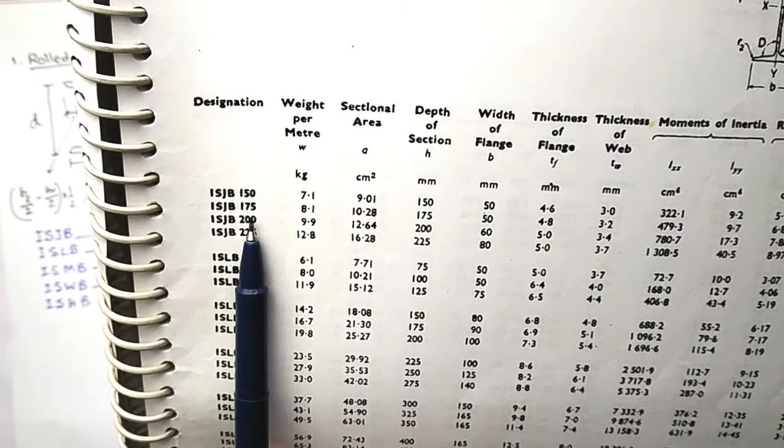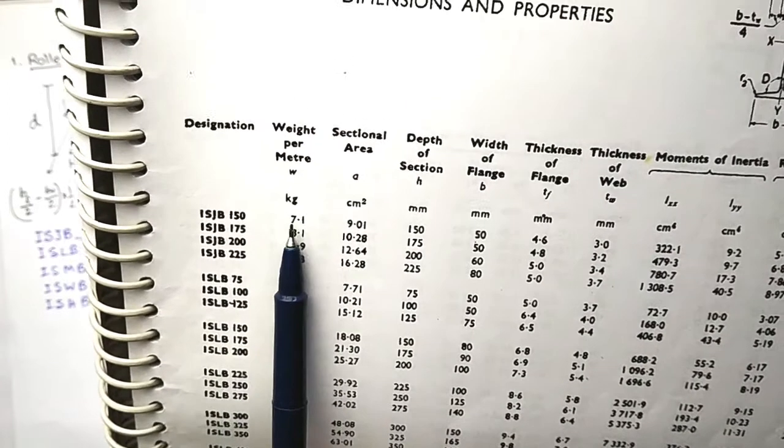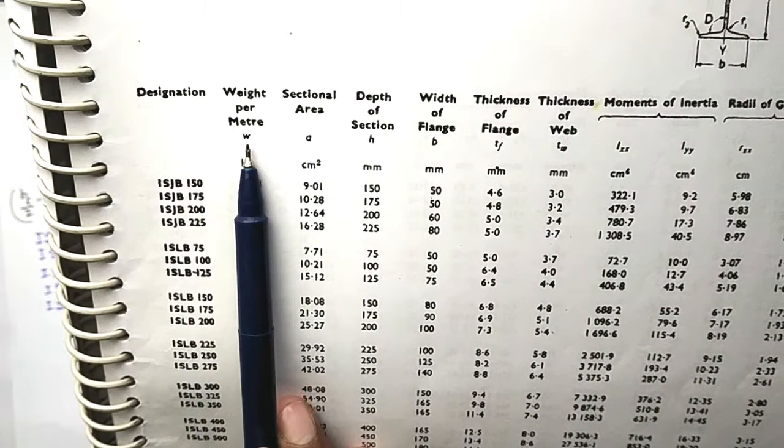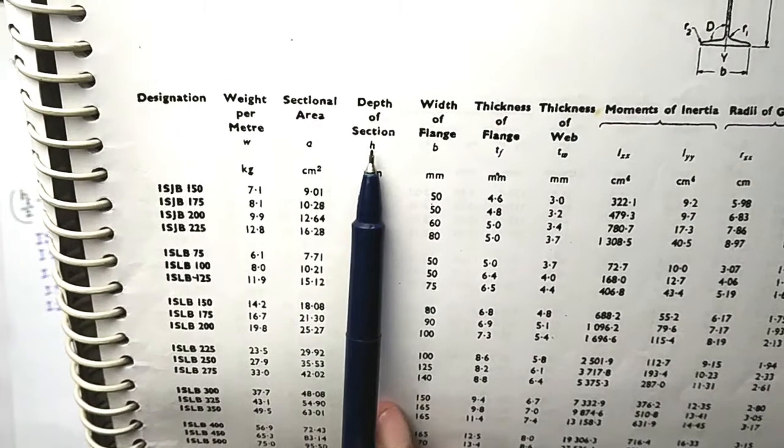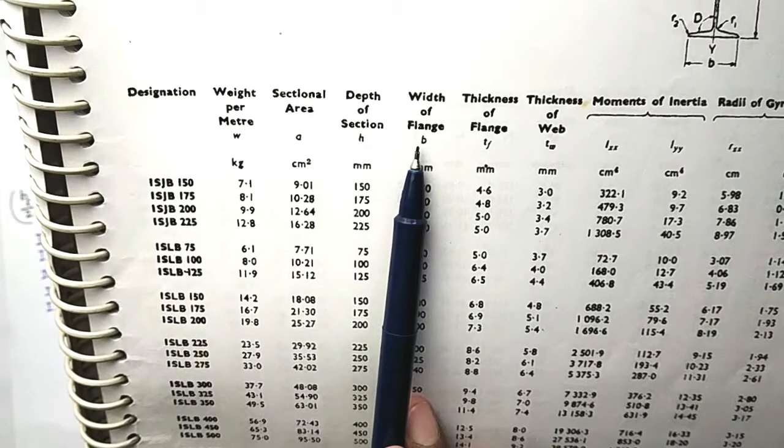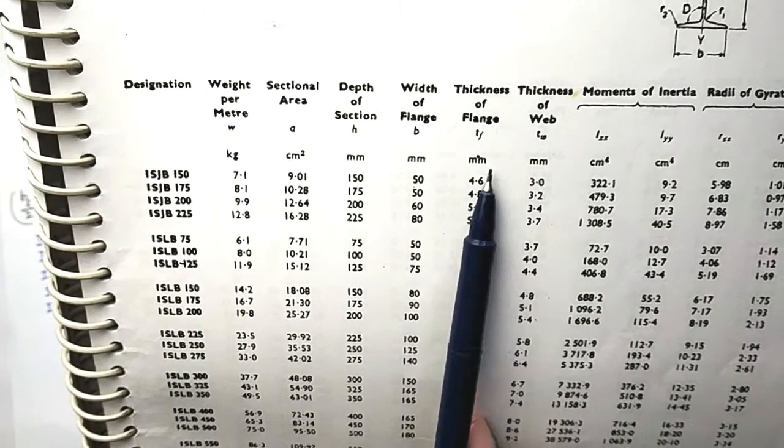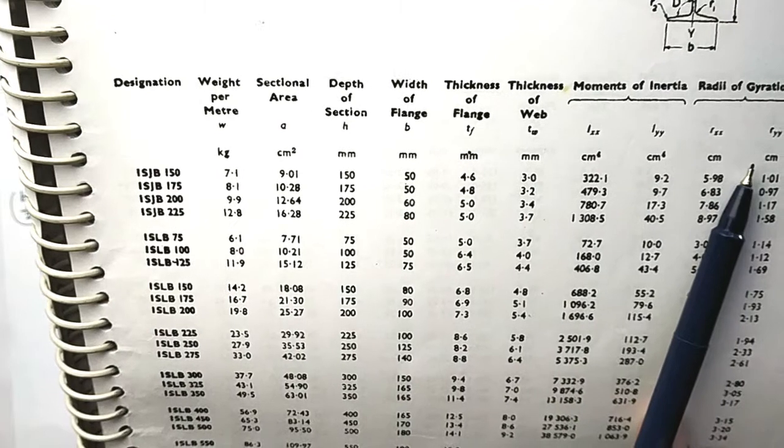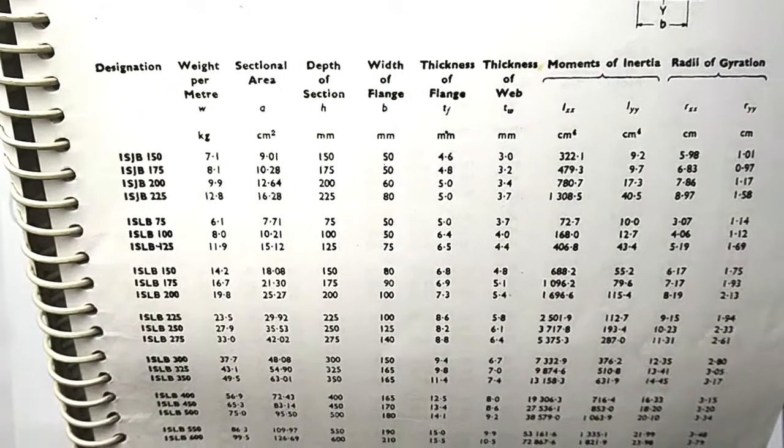These are designation ISJB 150, IS175 and all the other details: weight, unit weight, sectional area, depth of the section, width of flange, thickness of the flange, moment of inertia, radius of gyration, all things are given.